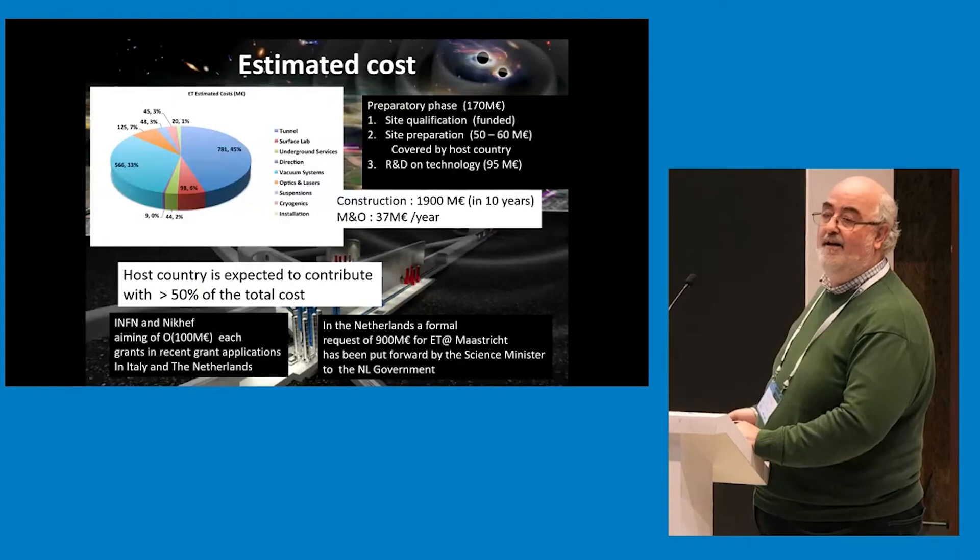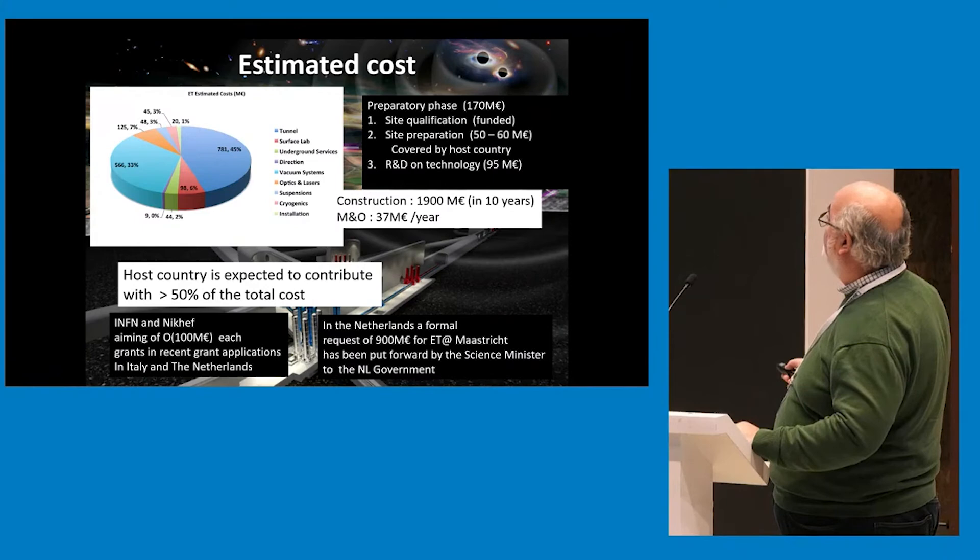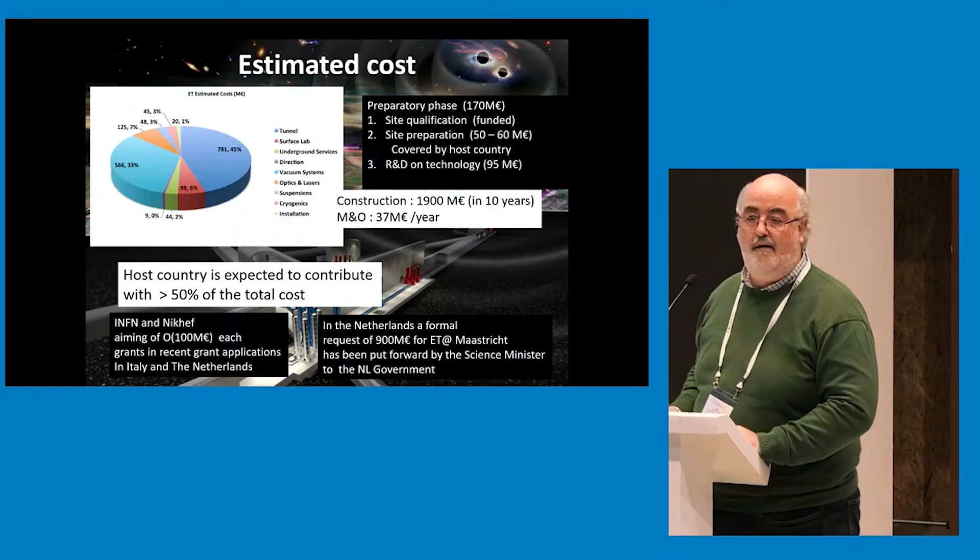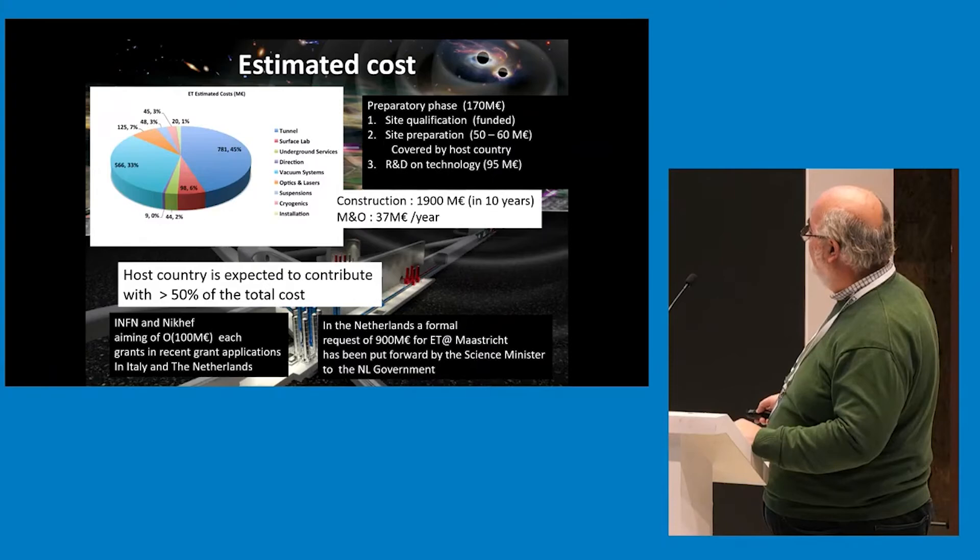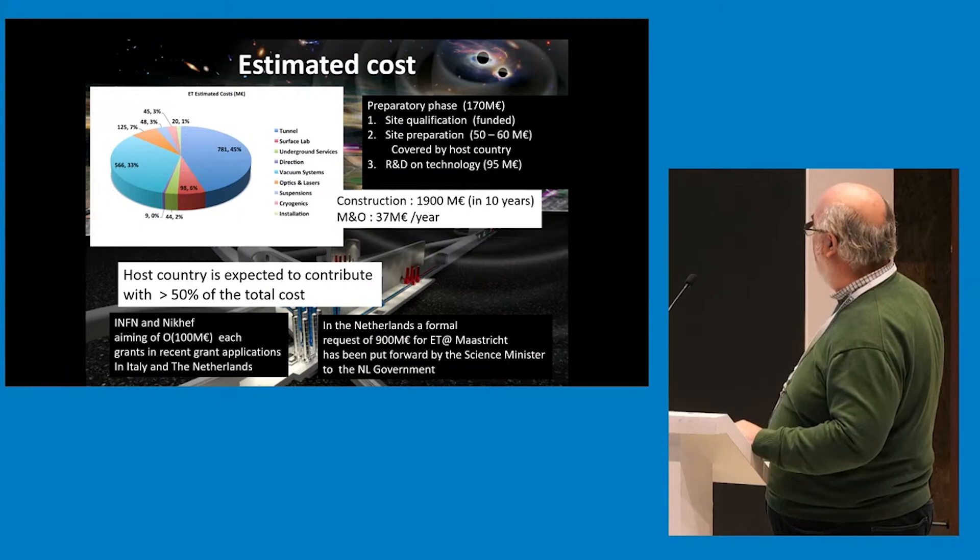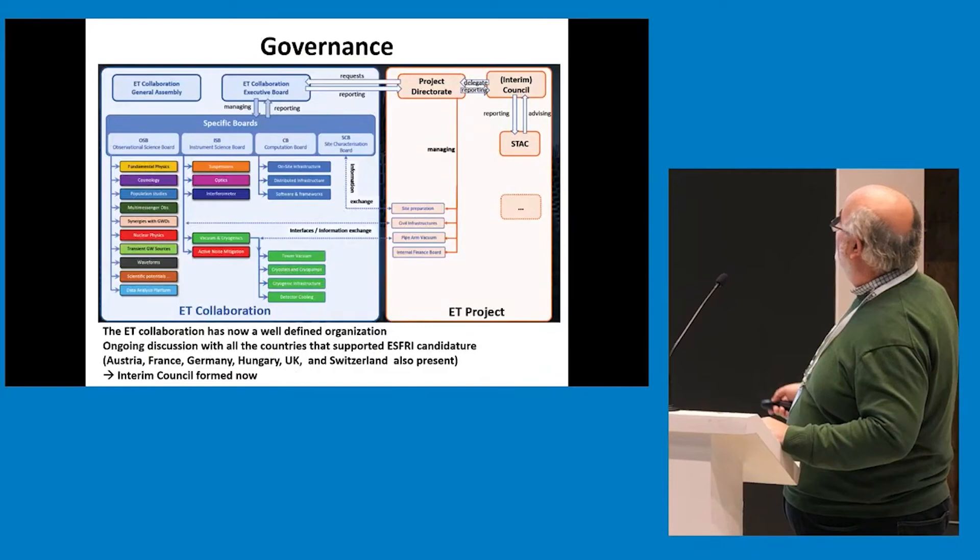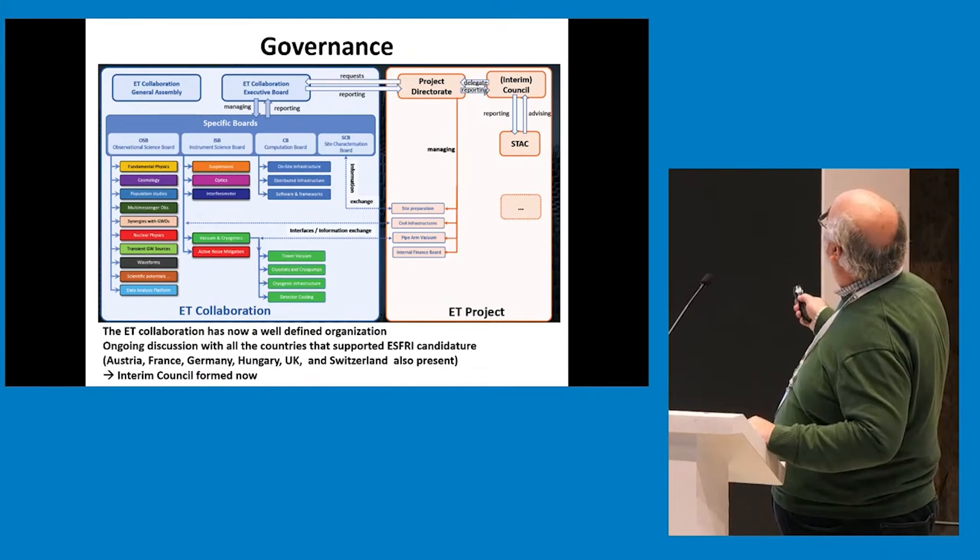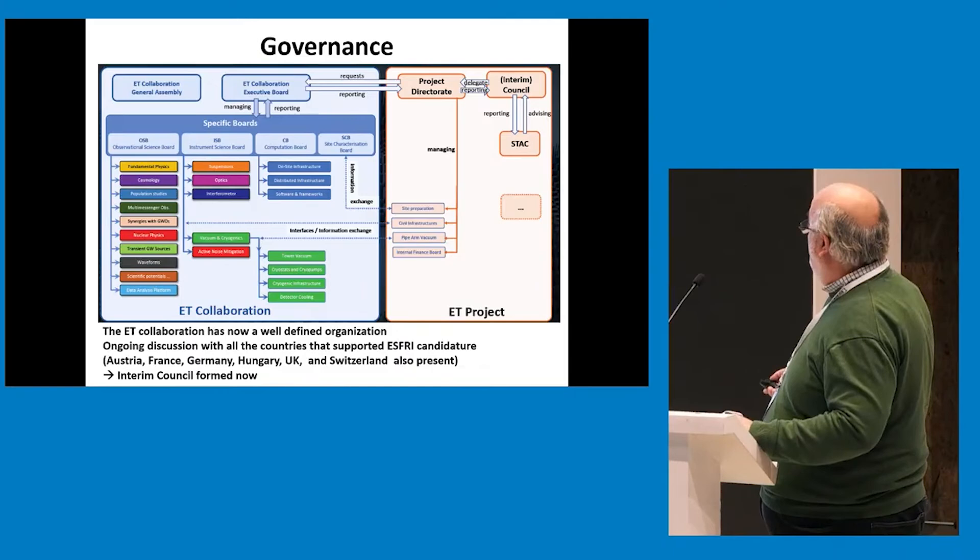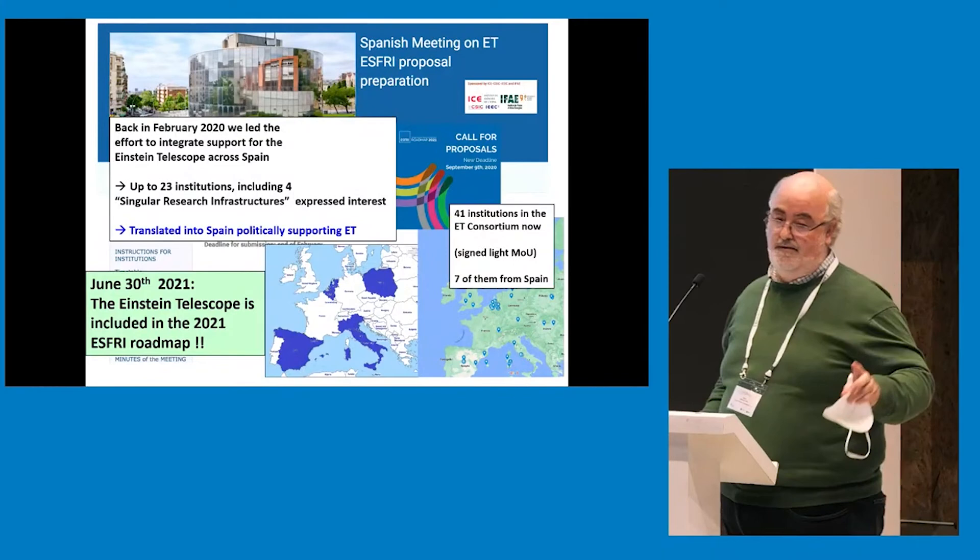Money, this is, I'm going to get the heart attack now. The budget, which you have to take with a grain of salt, is about two billion, and of course, the host country will have to be putting more than half on the table. Italy and the Netherlands already asked for some money, but this is the news from a couple of weeks ago: Netherlands already formally asked for almost a billion to the Netherlands government for the project. The governance is there, is actually working. There is a proto-council à la CERN. Basically the CERN model is being copied. And basically the things are moving very fast.